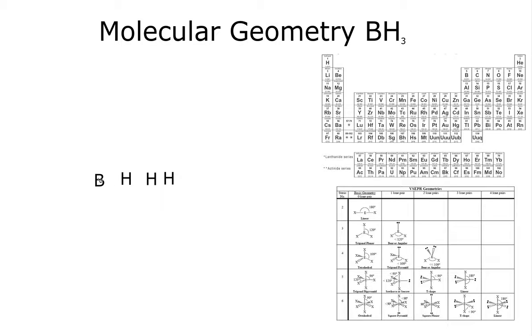We see that boron is found right here, group 13 or 3A, and that contributes three valence electrons. Hydrogen is found in group 1, so that'll contribute one valence electron. We have three of them, so let's put our ones here. 3 plus 1 plus 1 plus 1 is 6. So our molecule should contain six valence electrons.